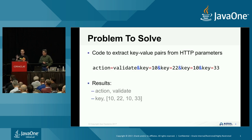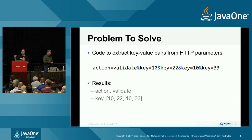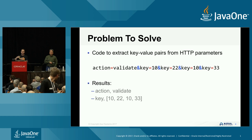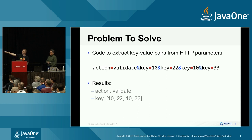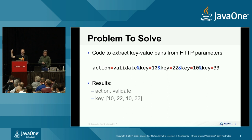The first thing was dealing with exceptions, because this can be quite tricky when it comes to using streams. The problem I had was processing data coming through a web interface - a very simple key-value set to extract information from. So: action is validate, key is 10, key is 22, key is 10, key is 33. I wanted results in the form of action/validate and key with a set of values 10, 22, 10, and 33. Importantly, I could have duplicate values in the set.